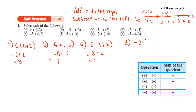Negative 2 minus negative 4. Negative and negative, you get positive. So negative 2 plus 4. Moving 4 steps to the right from negative 2: 1, 2, 3, 4. You get 2.